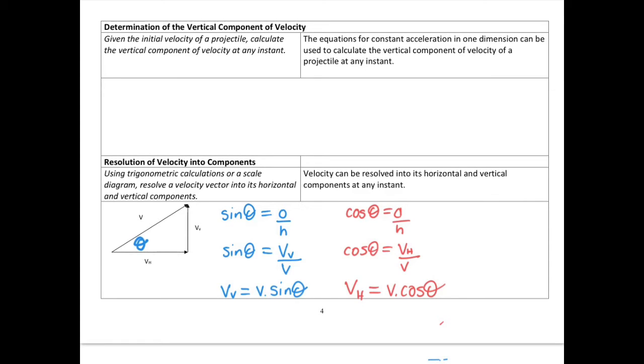The next thing we need to be able to do is, given the initial velocity of the projectile, calculate the vertical component of velocity at any instant. If we know the initial velocity, we now know how to work out the initial vertical velocity, which is what we did just below in the blue. We could also work out the horizontal velocity, but that won't change. However, the vertical velocity will be affected by gravity.